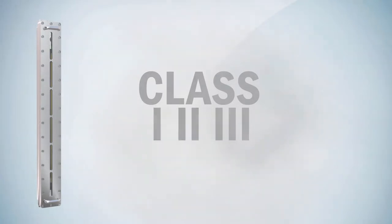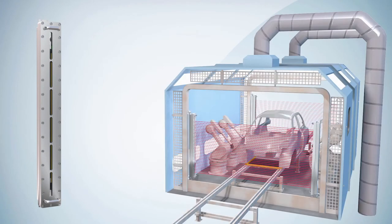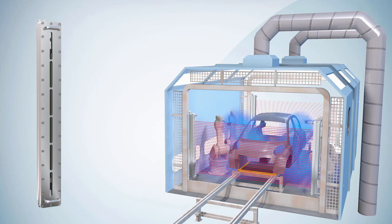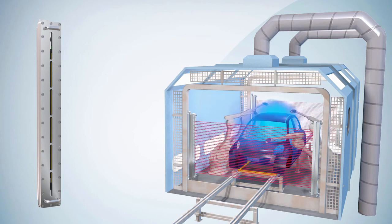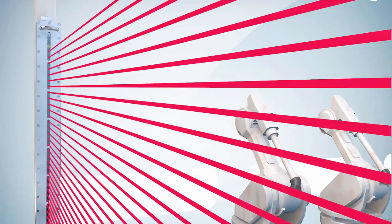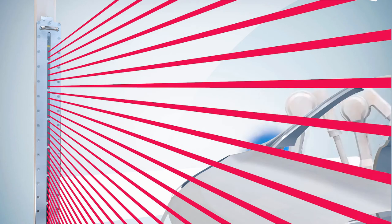In this paint booth example, safeguarding at the entrance and exit of the booth is needed to ensure no personnel can enter the hazardous area undetected. Explosion-proof safety light curtains are required due to the presence of flammable vapors from the painting process.